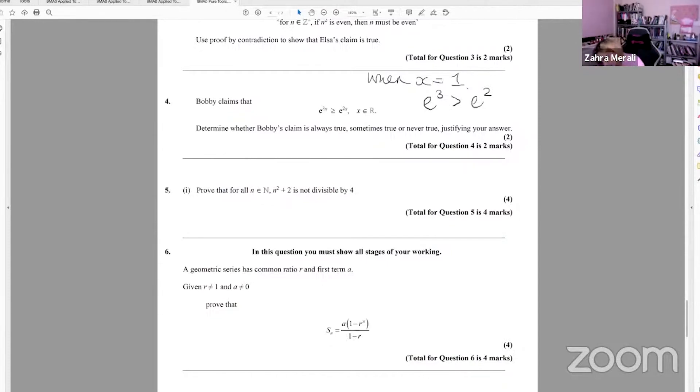But when x equals minus one, we're going to get e to the minus three. And if you're not sure what it is, you can put it in your calculator. You'll get which equals 0.04 something, and e to the minus two, which is 0.135. So you'll say e to the minus three is not greater than e to the minus two, therefore sometimes true. So for sometimes true, you have to show when it is true and when it isn't true.